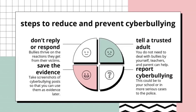Teach children and young people the following steps to reduce and prevent cyberbullying. First, don't reply or respond — bullies thrive on the reaction they get from their victims. Second, save the evidence — take screenshots of cyberbullying posts so that you can use them as evidence later. Third, tell a trusted adult — you do not need to deal with bullies by yourself; teachers and parents can help. Fourth, report cyberbullying — this could be to your school or, in more serious cases, to the police.